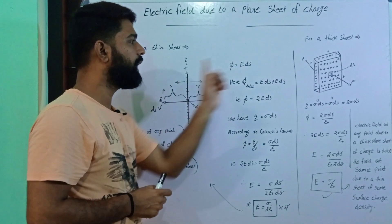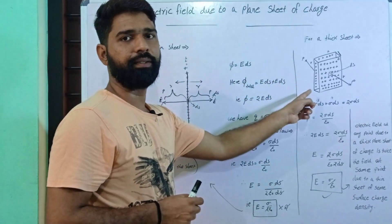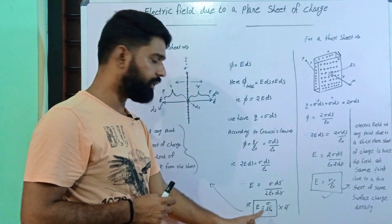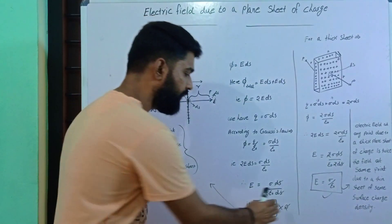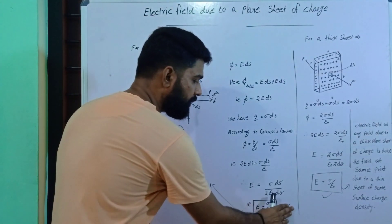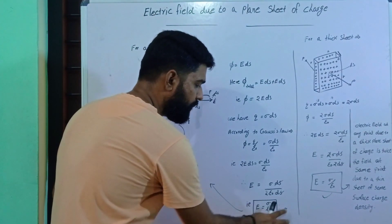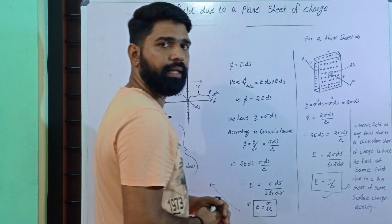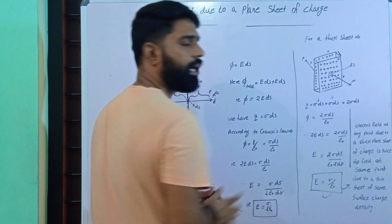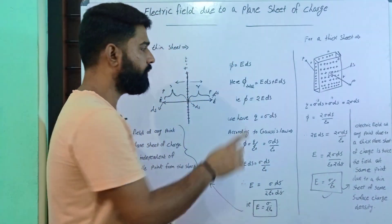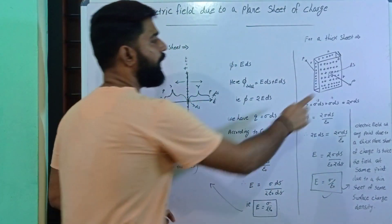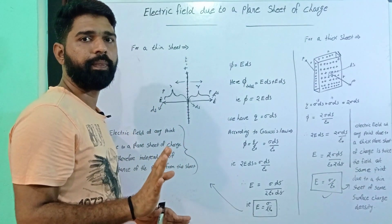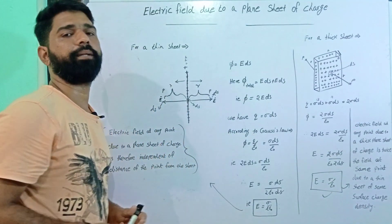In summary: for a thin sheet, the electric field E = σ/(2ε₀), and for a thick sheet, E = σ/ε₀. In both cases, the electric field is independent of the distance from the sheet.